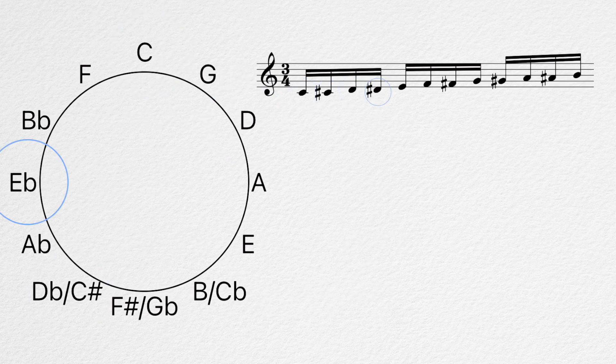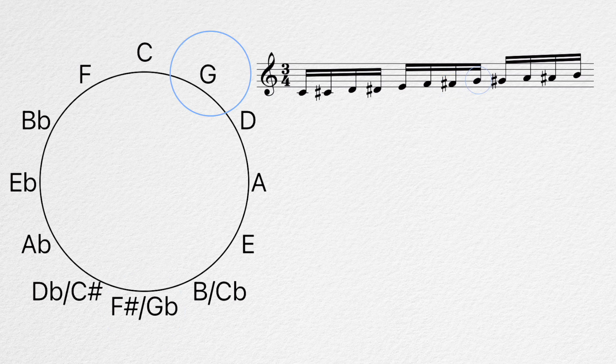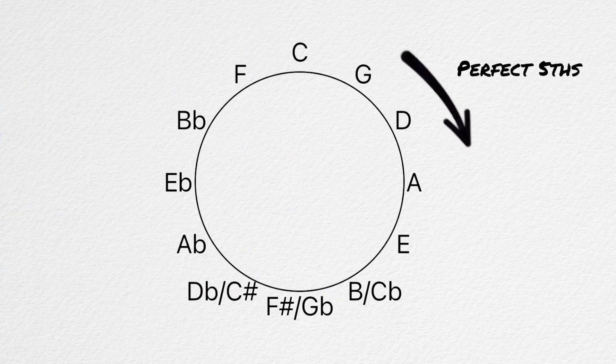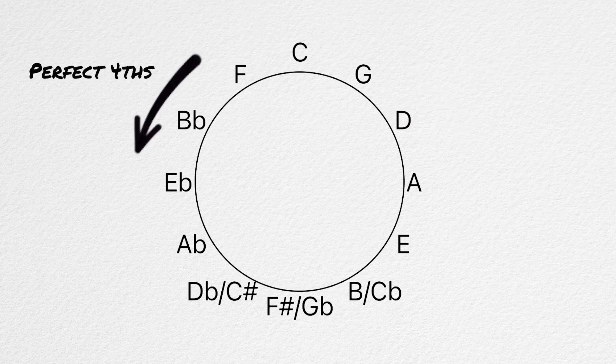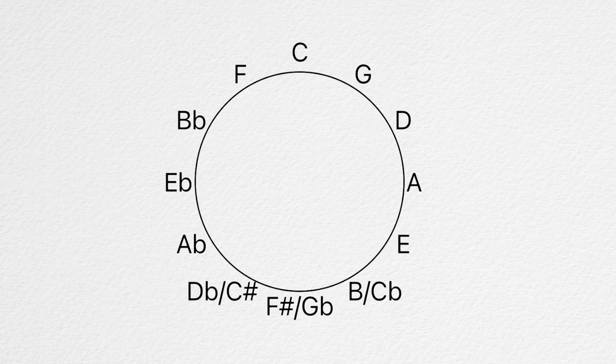But what does it actually do? Well first, what is it? The most basic form of the circle of fifths is just all 12 pitches of the chromatic scale arranged in a circle or a clock face. When we move clockwise, we move a fifth with each step, and when we move counterclockwise, we move a fourth. And for a long time, that was my level of understanding of it. But what else is it good for? Why is this even worth memorizing?